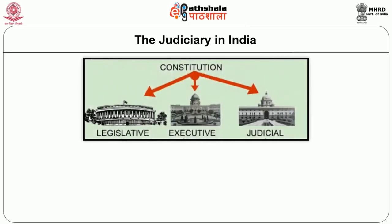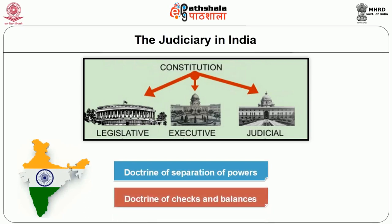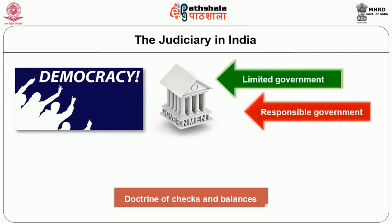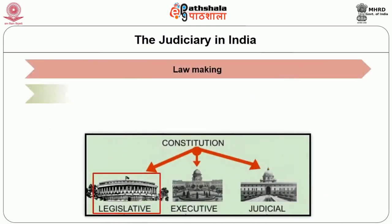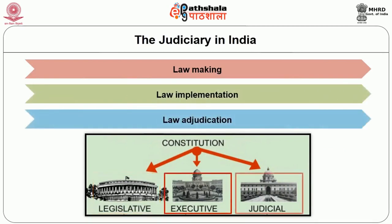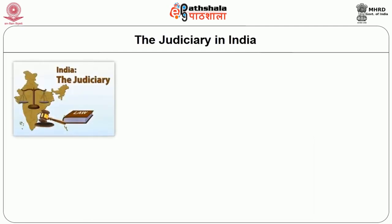We will discuss in this module about the judiciary in India and how judicial institutions have been shaped. In every government there are three organs: legislature, executive, and judiciary. In India, like in any other liberal democracy, there is a doctrine of separation of powers and checks and balances. The three organs have their own powers and roles in making government a responsible, limited government. Judiciary performs the task of adjudication of law, while lawmaking is the job of the legislature and law implementation is the responsibility of the executive.